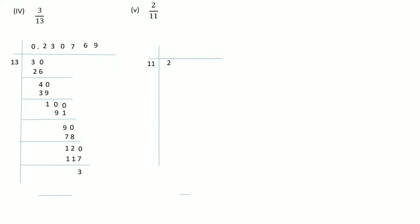For 2 upon 11, the divisor is 11 and the dividend is 2, which is smaller than the divisor. Place a decimal point in the quotient and add a 0. 11 times 1 is 11; on subtraction the remainder is 9. Add a 0 — 11 times 8 is 88; on subtraction the remainder is 2. Add a 0; 11 times 1 is 11; remainder is 9. Add a 0; 11 times 8 is 88; the remainder is 2 again. The remainders repeat.